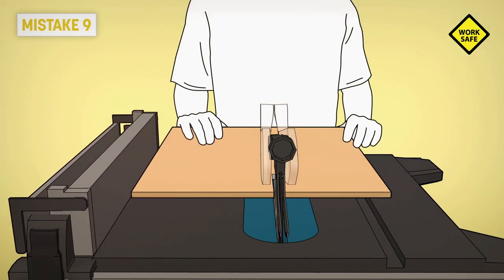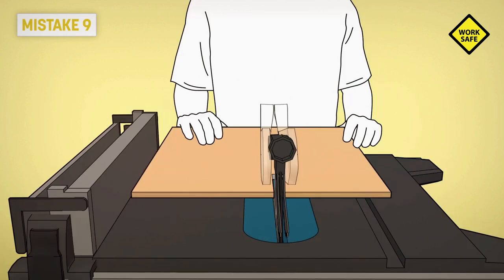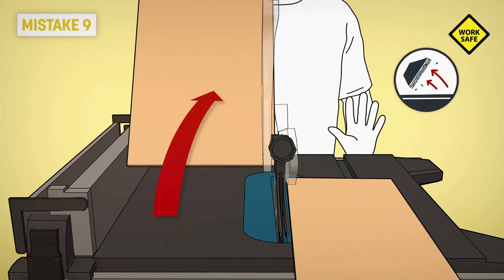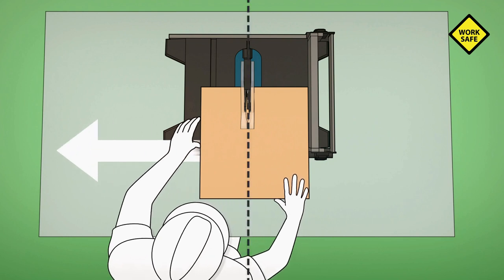Mistake nine: leaving part of your body in line with the blade. If kickback occurs, the cutoff piece will be thrown back at you. You need to always keep your body and your face on one side of the blade so that you are not in line with it.